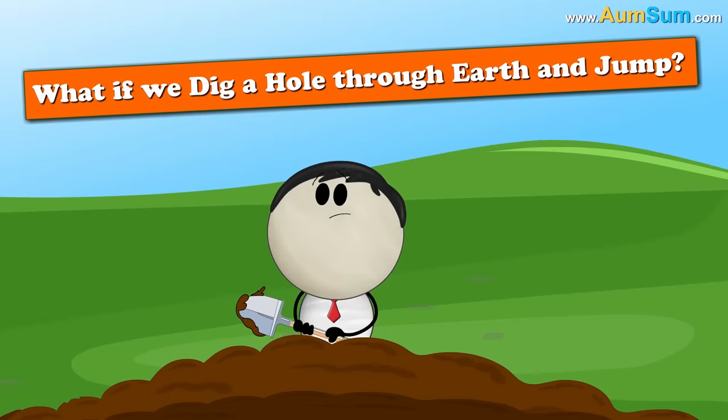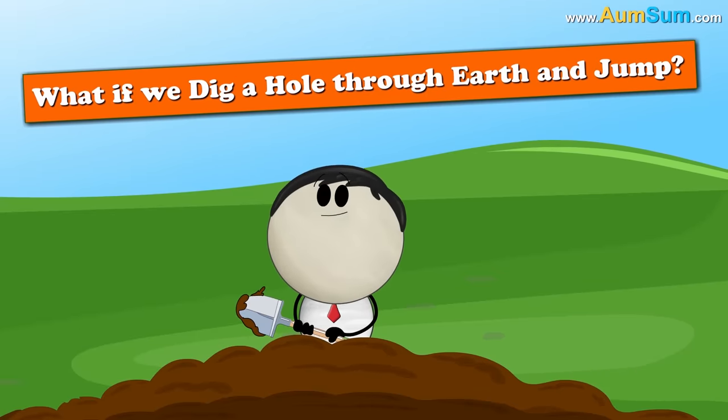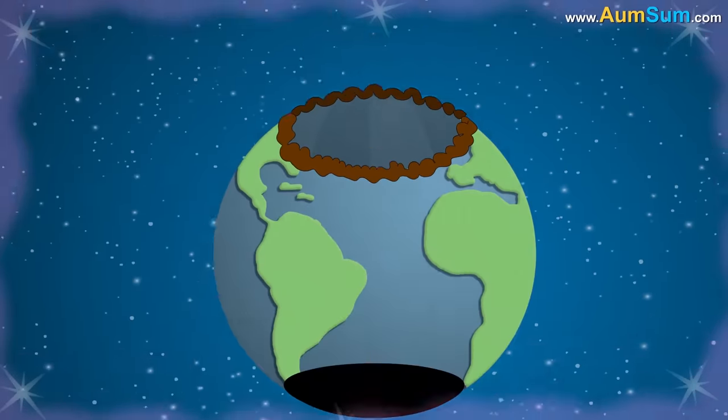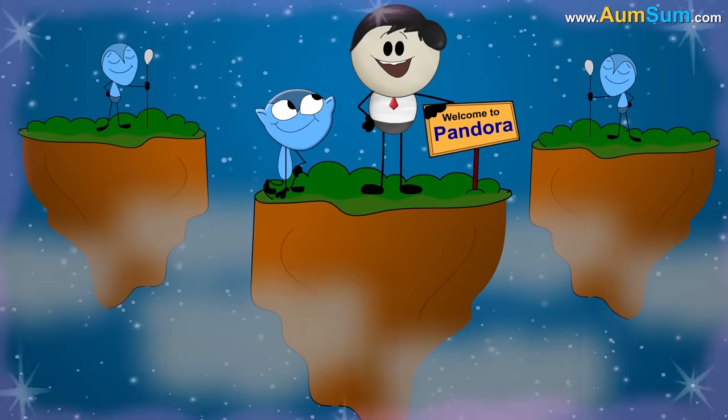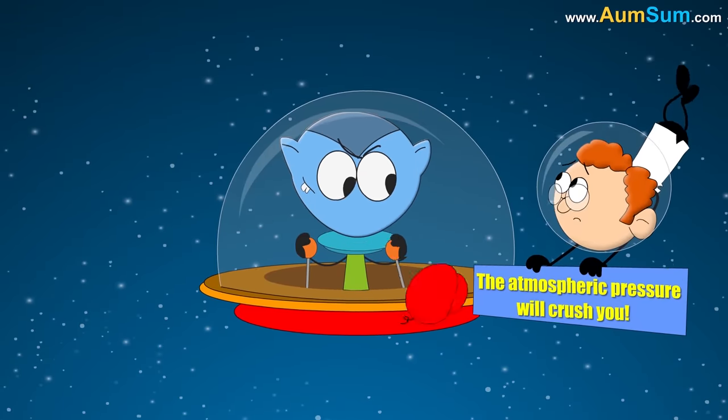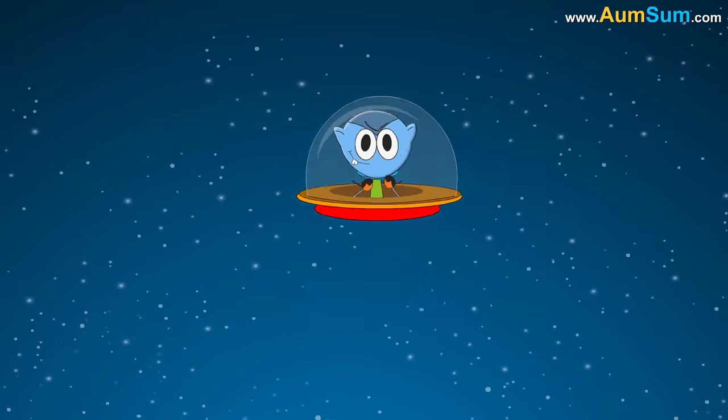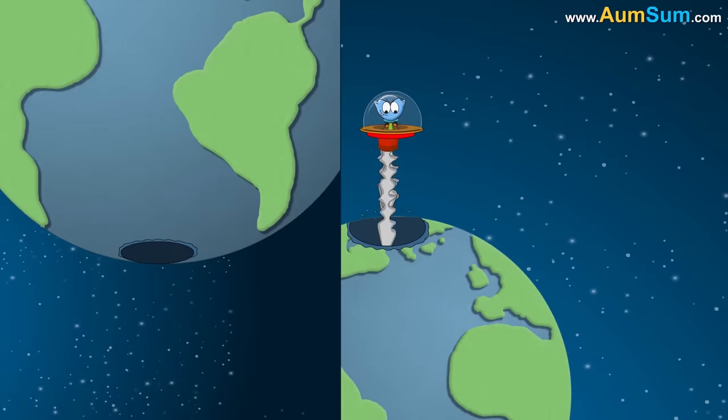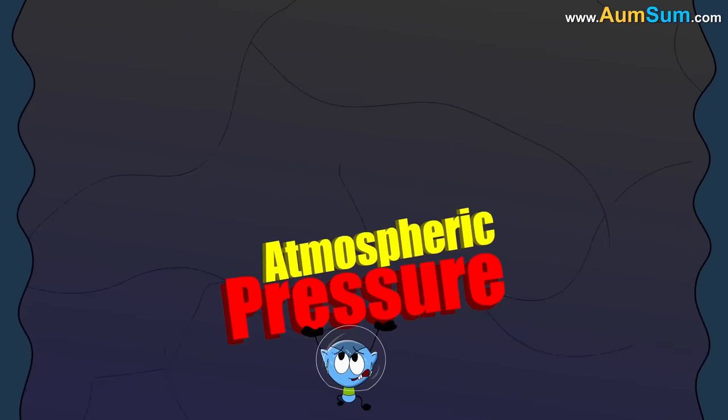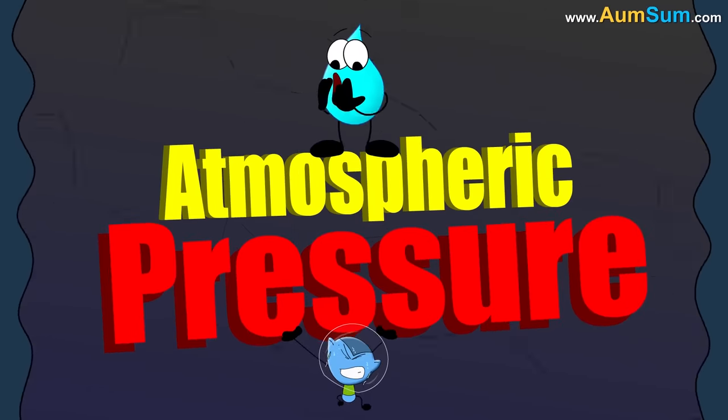What if we dig a hole through Earth and jump? Then we would land on Pandora. Oh AumSum. Firstly, the atmospheric pressure will crush us. Why? Because once we go about 40 miles down, atmospheric pressure increases by about 1000 times than that at the sea level.